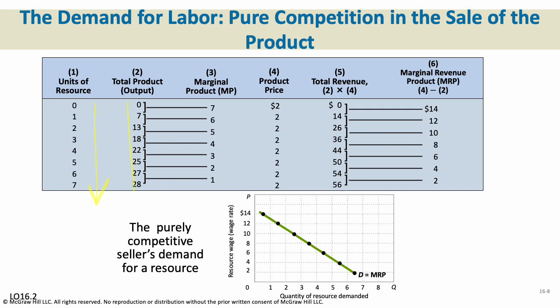So total output increases, but here's the change from one step to another as we hire additional people. The product costs $2, so total revenue is simply how much we made times its price. And here is our marginal revenue product — that's the one we're interested in. It's the change from each step as we hire an additional worker, going from 14 to 12 to 10 to 8 to 6 to 4 to 2. That's the change by adding an additional worker, so it is downward sloping.